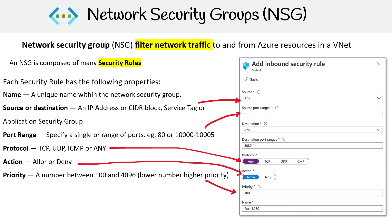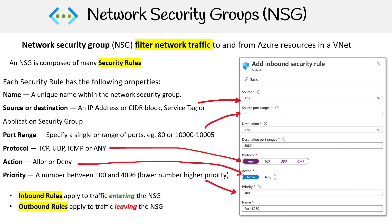There are two types of security rules: inbound rules, which apply to traffic entering the NSG, and outbound rules, which apply to traffic leaving the NSG.